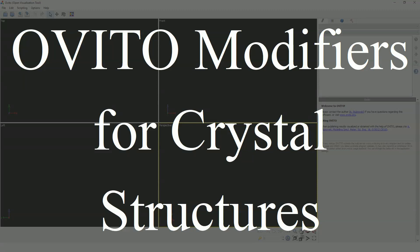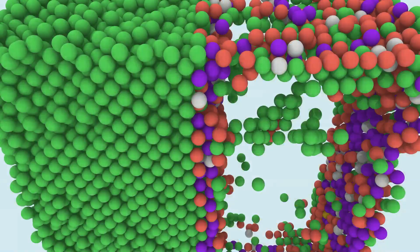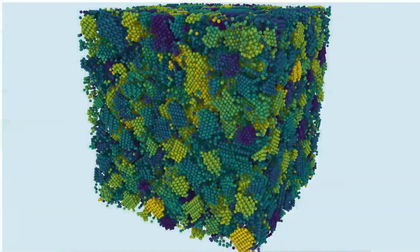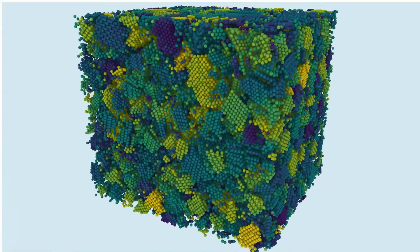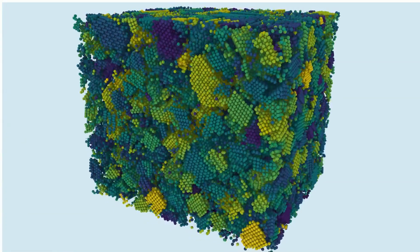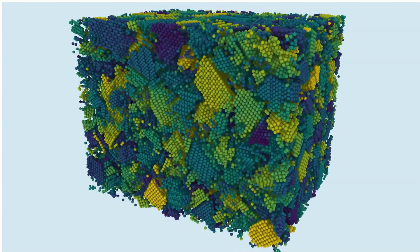Welcome back to another Oviedo tutorial. Today I'll be showing you how to use a few of the built-in Oviedo analysis modifiers, particularly for studying the crystal structure in metals. We'll be looking at the centrosymmetry parameter, polyhedral template matching, as well as common neighbor analysis. Along the way we'll also look at some basic visualization modifiers that can help you visualize any number of simulations. So let's hop right over into Oviedo.